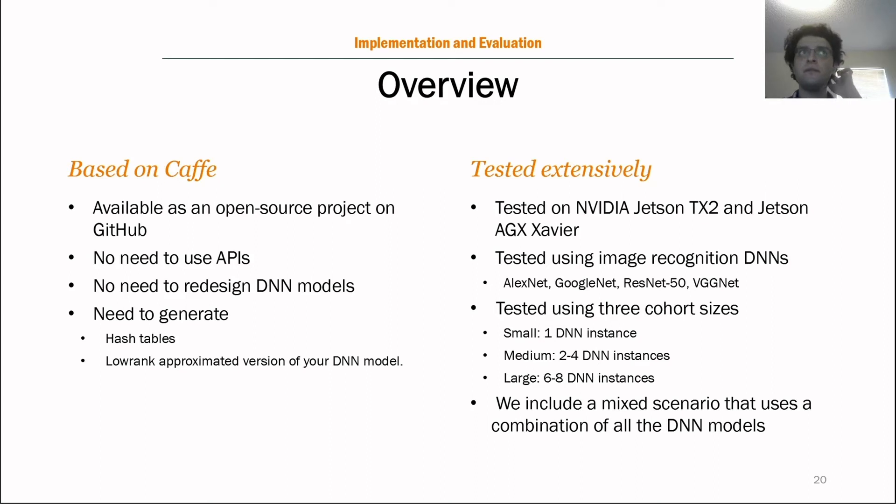So we also extensively evaluated NeOS. We evaluated on the NVIDIA's low-power Jetson TX2, which is an embedded device, and the next-generation and much faster Jetson AGX Xavier, which is actively being pushed for autonomous embedded systems by NVIDIA. We used image recognition DNNs AlexNet, GoogleNet, ResNet, and VGGNet as representative of our target platform. We set our target latencies based on DNN complexity and platform. The deadlines are based on the characteristics of the DNNs. We also test our platform using various sizes of cohort. Using a small cohort with one DNN instance to directly compare against all the approaches that are multi-DNN agnostic. And we also have a medium cohort and a large cohort to test our multi-DNN capability. We also include a mixed scenario, which we include a DNN instance from each of these to show the versatility of our approach.